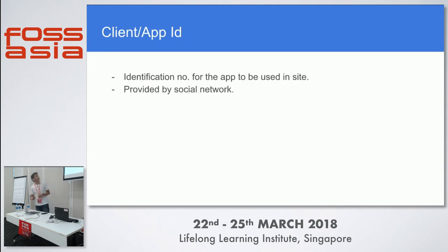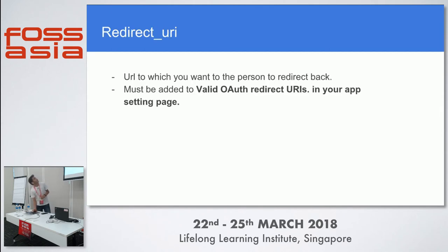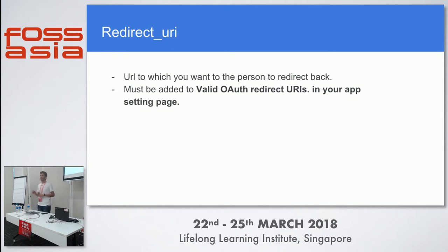The client ID is an identification number for the app, provided by the social network — you can't decide it yourself. For example, if you go to Facebook, they will give you an app ID. The redirect URL must be defined in both your GET request and in the app settings page on the social network, to validate that the user is being redirected to a proper valid URL of your website and not being intercepted.